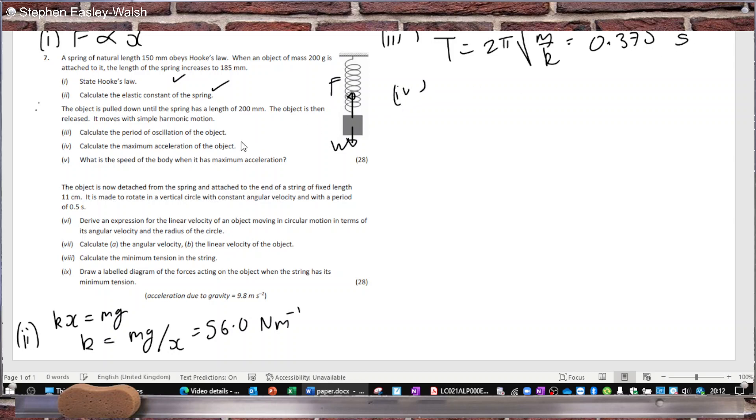Part 4: Calculate the maximum acceleration. Maximum acceleration is A times omega squared, where omega is 2π over T. The amplitude from 185 to 200 is 15 millimeters, so that's 0.015 times (2π/T) squared, which equals 4.20 meters per second squared.